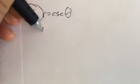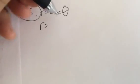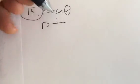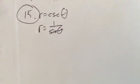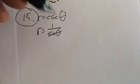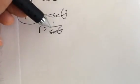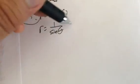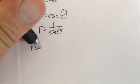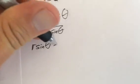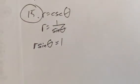So first off, I'm going to deal with this cosecant. Cosecant is just the same as 1 over sine. I can just multiply both sides by sine. If I do that, I end up with r sine theta equals 1.